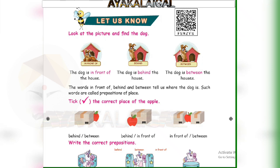In front of — that is the dog in front of the house. The dog is behind the house — that means the word 'behind.' The dog is between the house — we are going to learn 'between.'